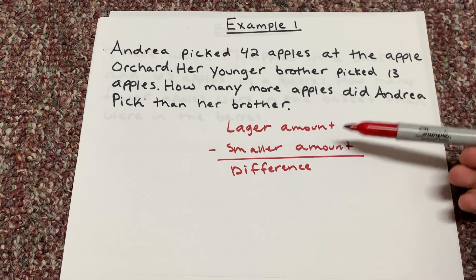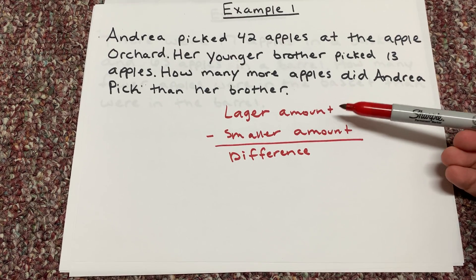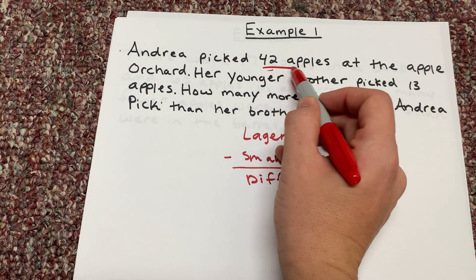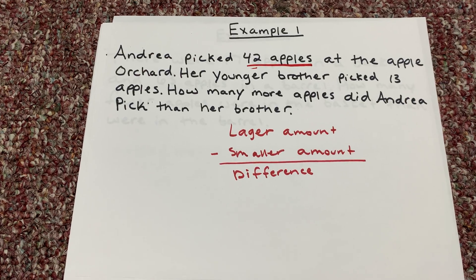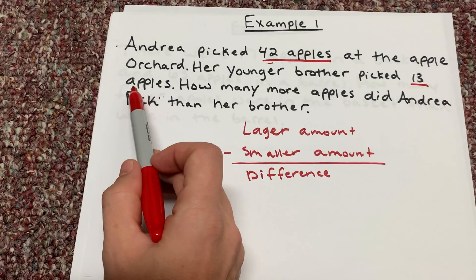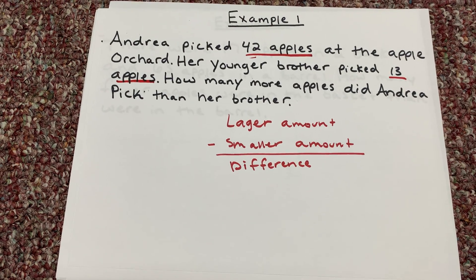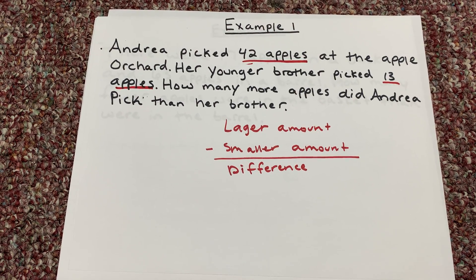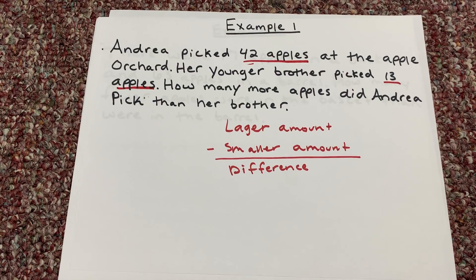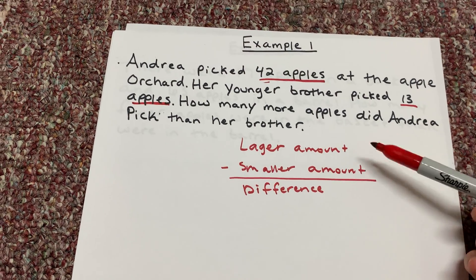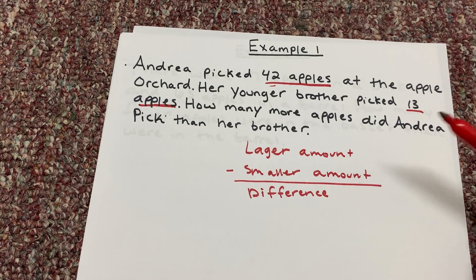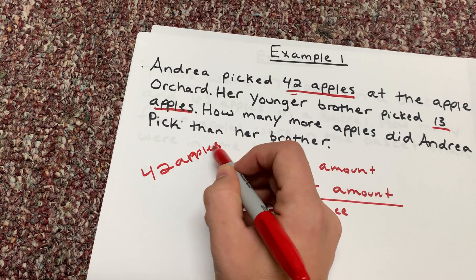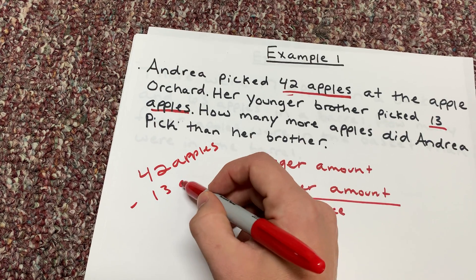So when we're looking at these word problems, we find our larger amount first. Here we have 42 apples, and then we find our smaller amount, which is 13 apples. To find the difference — because it asks us how many more apples did Andrea pick than her brother — we're going to subtract our smaller amount from our larger amount. So we take 42 apples and subtract 13 apples.